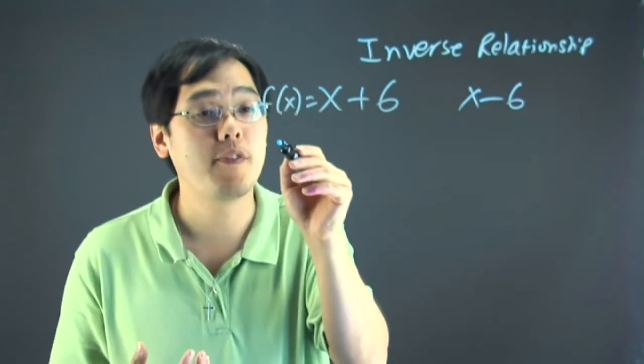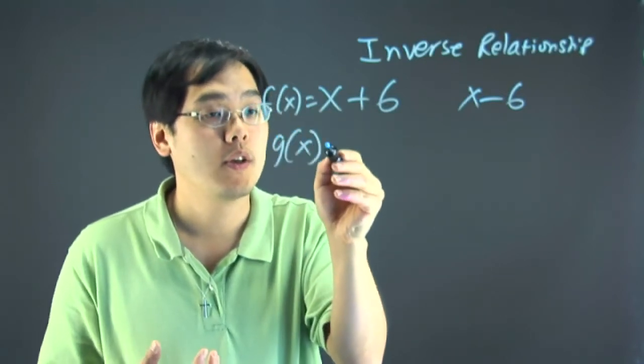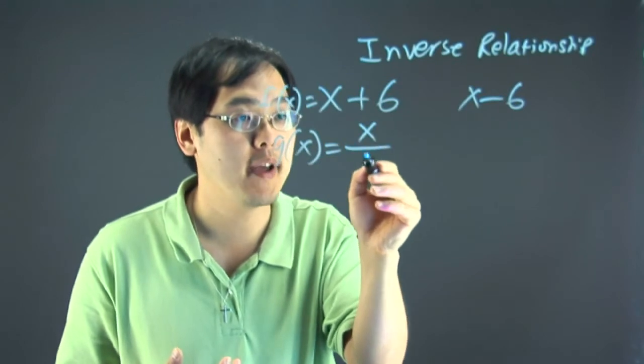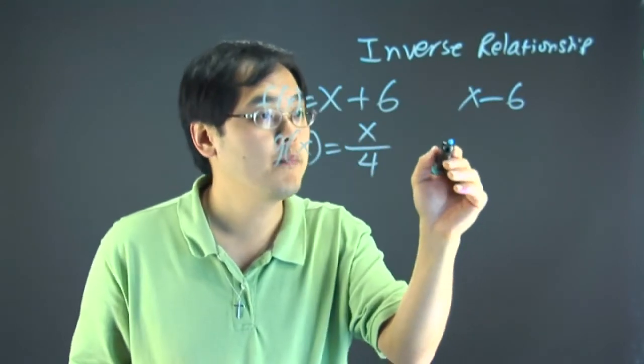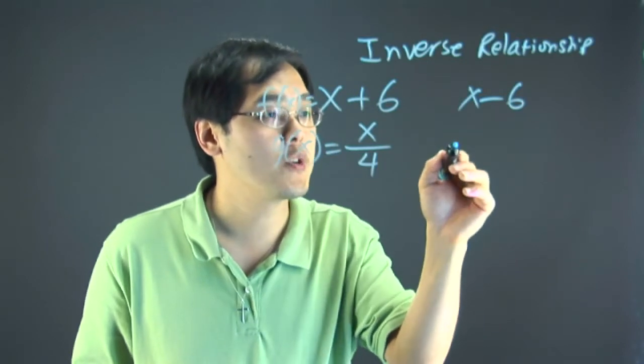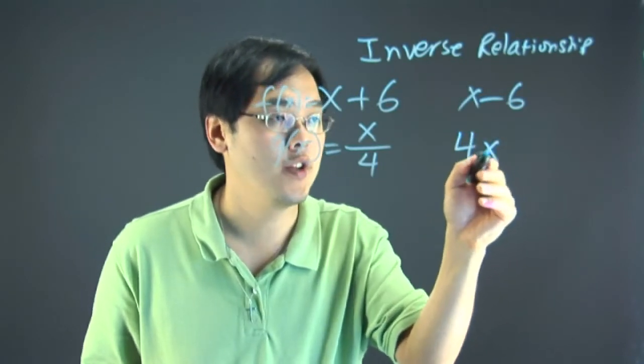Similarly, if you have a function where something is divided by 4, where division is the original operation, the inverse relationship would be multiplication by 4.